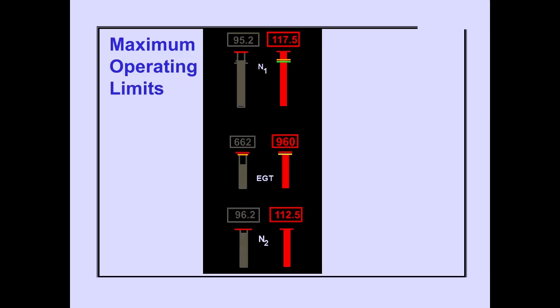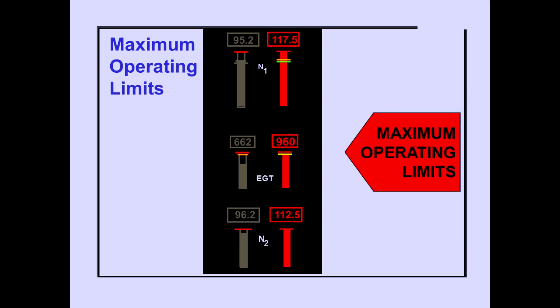Maximum operating limits are displayed as red lines. When N1, EGT, or N2 reaches the operating limit, the indication changes color to red.